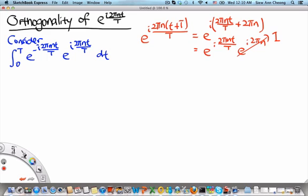Now let us evaluate these two integrals and see what we get. First, we combine the two complex exponentials to write this as e to the i 2π (n minus m)t over capital T dt.